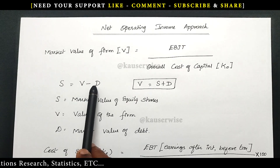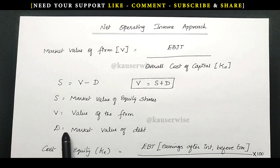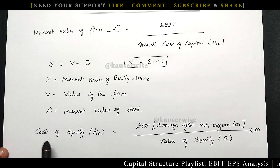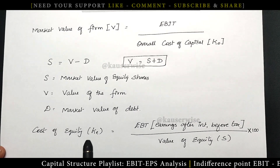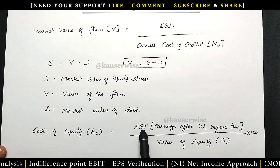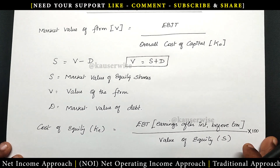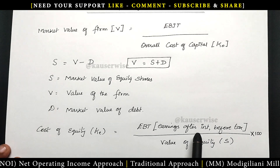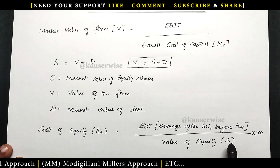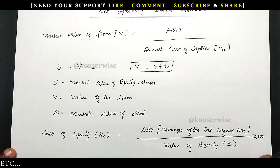S is equal to V minus D, where S refers to market value of equity, V refers to market value of the firm, and D refers to market value of debt. The second important component is the cost of equity, that is KE — also called the equity capitalization rate. The formula is EBT (earnings after interest but before tax) divided by S (market value of equity), multiplied by 100. Since one assumption of the net operating income approach is there is no corporate tax, we use earnings before tax but after interest.